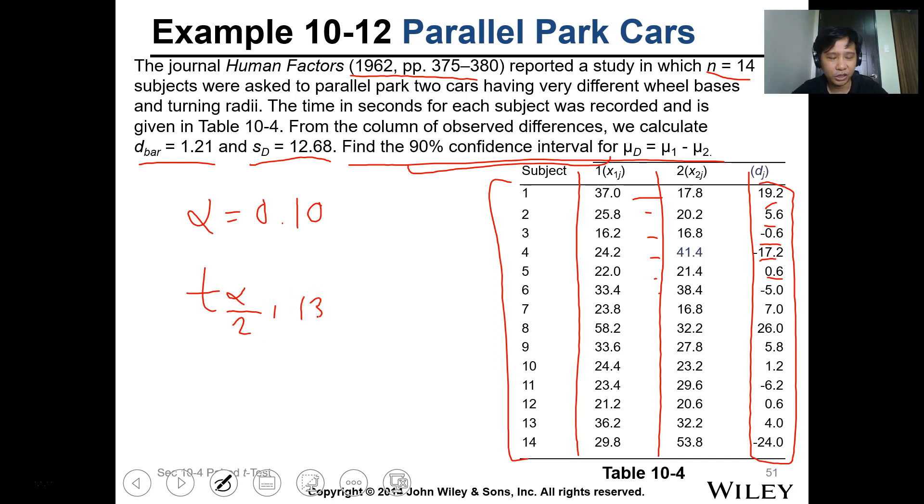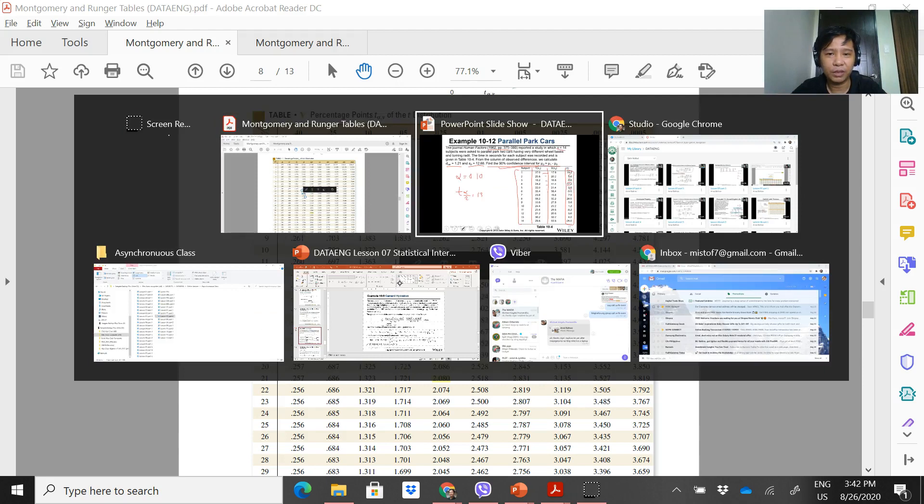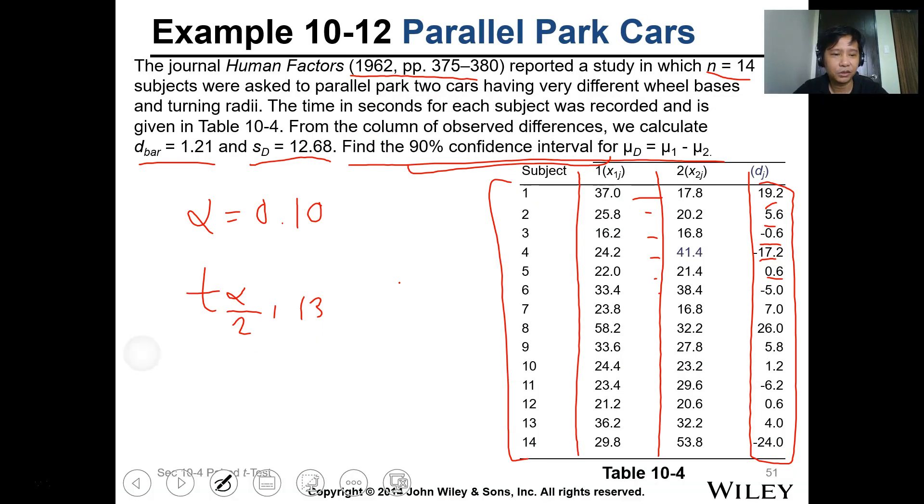So when you look it up in our t-table, we need 0.05 and 13 degrees of freedom. So this is 1.77. Let me go back here. So this is 1.77, this is the t-value we need.